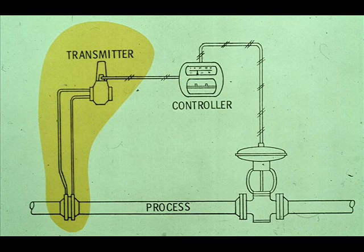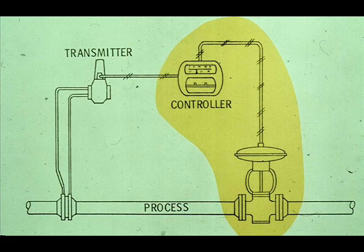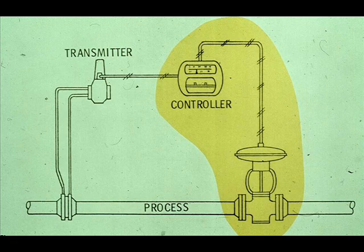The delta P measured by the orifice plate goes to a transmitter, which converts the measured delta P to a signal which is proportional to the delta P. This signal goes to the controller. The controller compares this measurement to the desired measurement, called set point, then computes a control signal which goes to the control valve. The control valve will then open or close as necessary to keep the flow rate at the desired point.